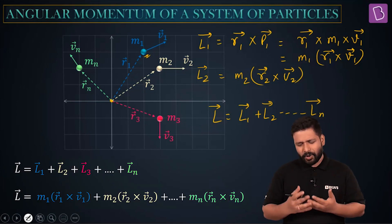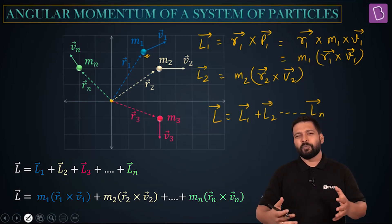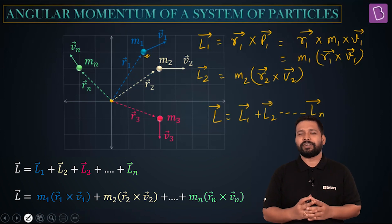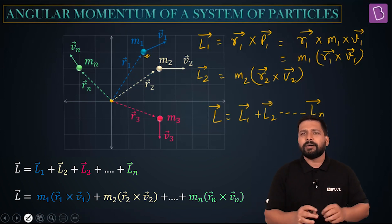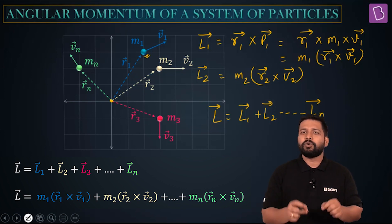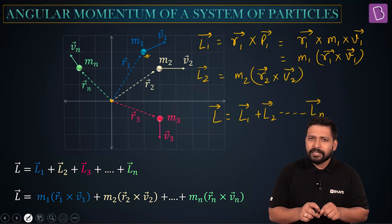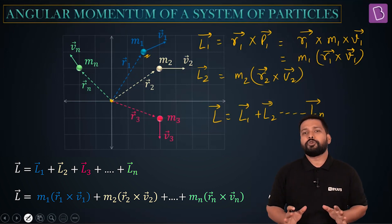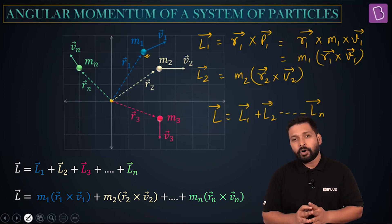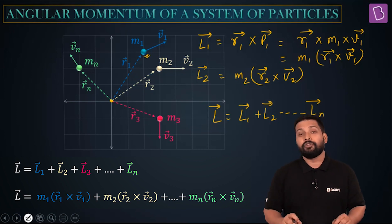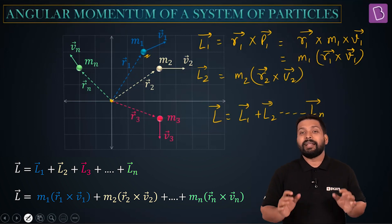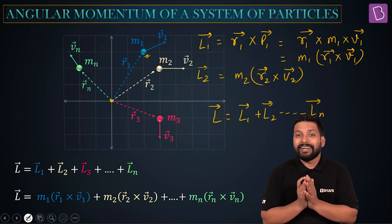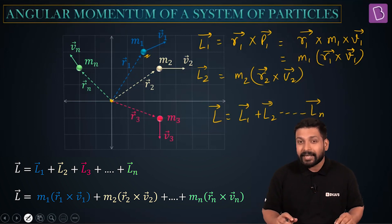This is just a simple formula. If there are discrete individual particles and you have to find the angular momentum about a particular axis or point, find the value of angular momentum for each individual particle, vectorially add all of them, and that gives you the net angular momentum for that system of particles.